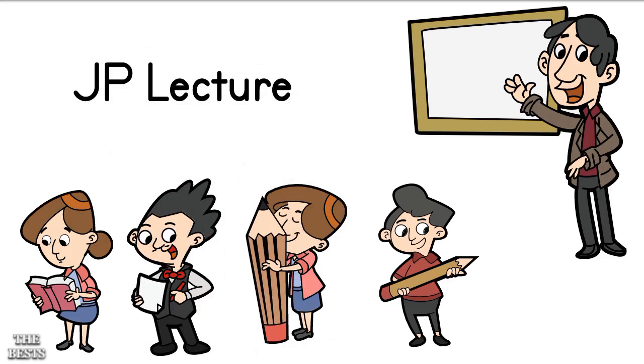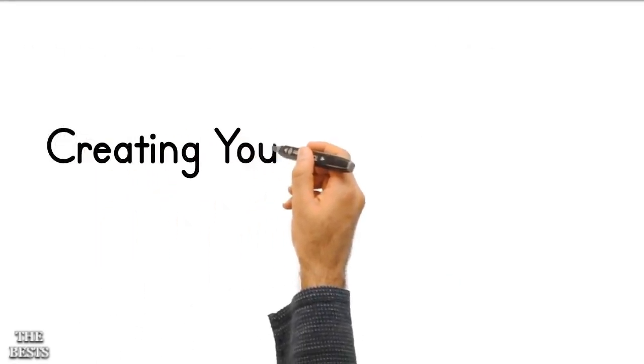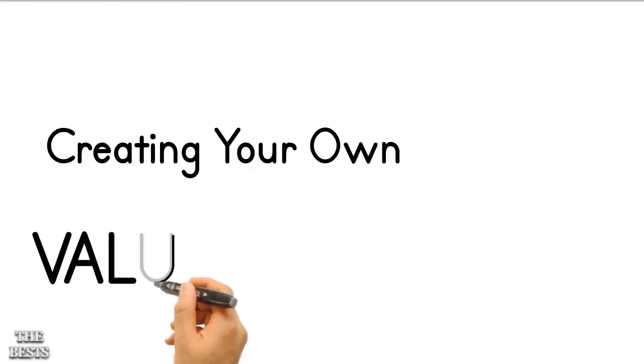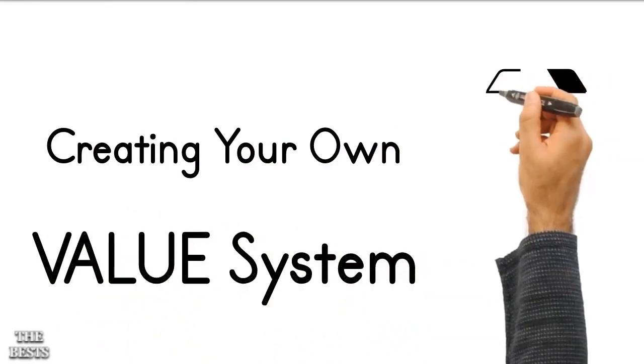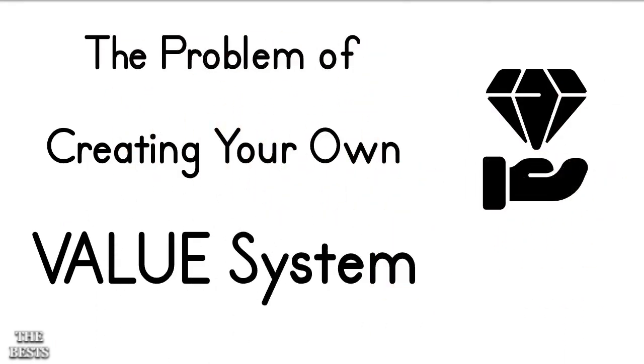So the Nietzschean idea is that it's possible for human beings to create their own values. Now, there's a problem with that, or there's a variety of problems with that. One is that it doesn't seem exactly true. A lot of the existentialists who followed Nietzsche, like Jean-Paul Sartre, believed in the radical freedom of human beings, that we were doomed to be free, and that it was absolutely necessary for us to conjure up our own meanings and values because fundamentally we faced the void.